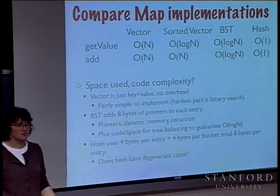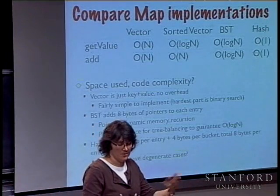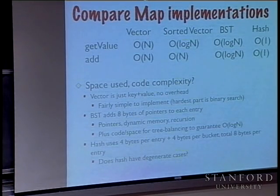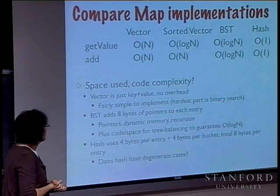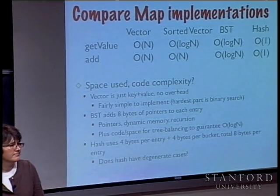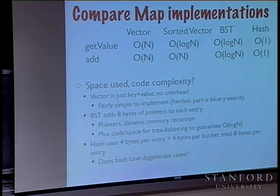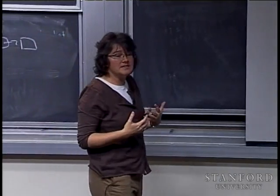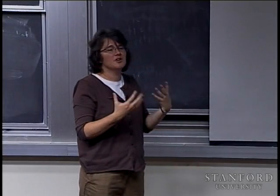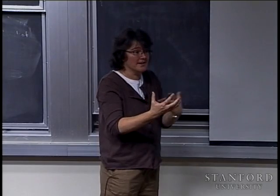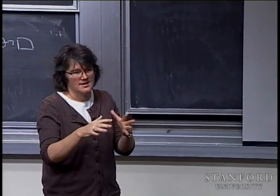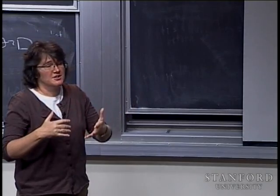If you overestimate the number of buckets you need, you waste memory. Most hash tables don't shrink — similarly to how a vector only grows on demand. Unused capacity has less penalty than doing extra work to find things. You'd typically commit to a minimum size and not shrink below it, letting excess capacity sit. Most hash tables only grow anyway — it's unusual to remove a large number of entries you've already inserted.